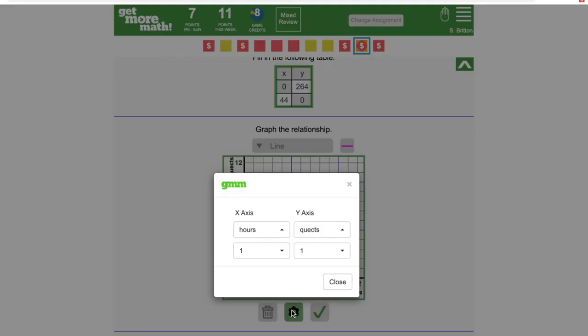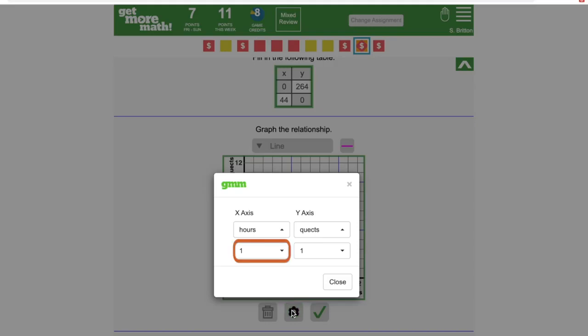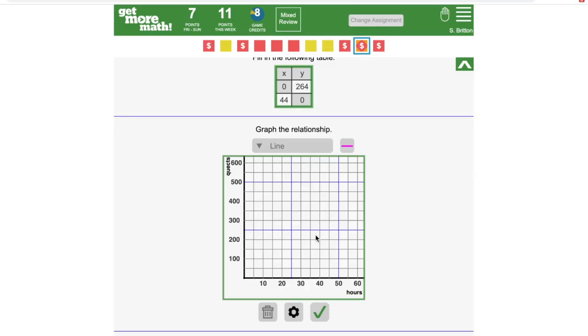To fix this, I'm going to go back into the graph settings that we just saw, and this time I'll use the bottom menus to change the scale of my graph. I'll set my x scale to 5 and my y scale to 50. Now the graph goes far enough for me to plot my points.